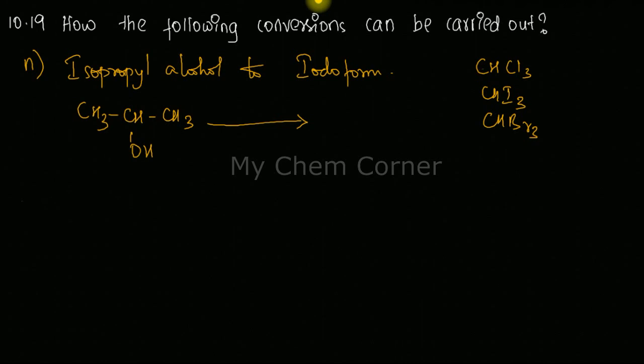So whenever you have a compound like this where you have three halogens bonded to one carbon, such kind of a compound is called as a haloform. Therefore this particular reaction is called as haloform reaction.